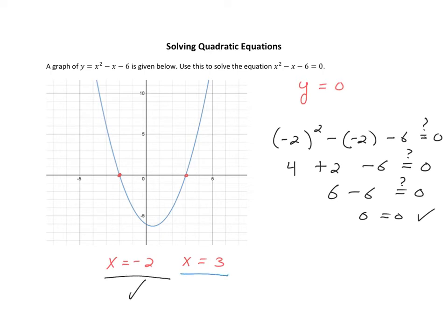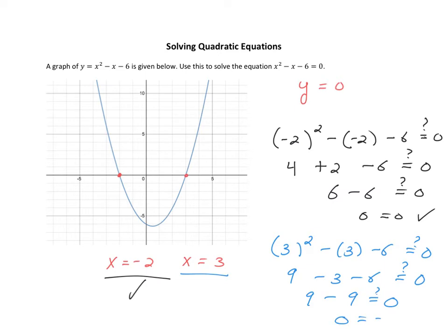Does the same thing happen for x is equal to 3? Let's see: 3 squared minus 3 minus 6 — does that equal 0 as well? 3 squared is 9, minus 3 minus 6. This is 9 minus 9, and certainly 9 minus 9 is equal to 0. So here's a method you can use to solve a quadratic equation: look at its graph, see if you can identify the places where it equals 0, and plug them in to check your answers.